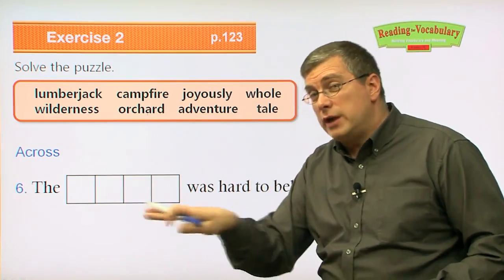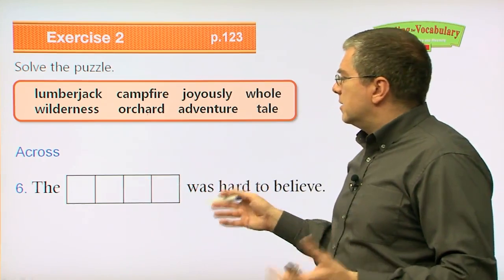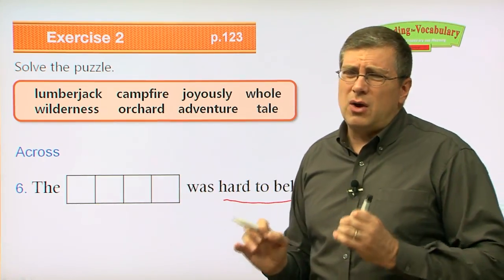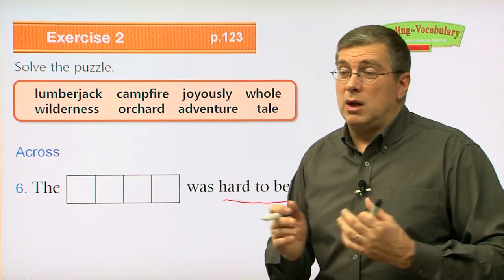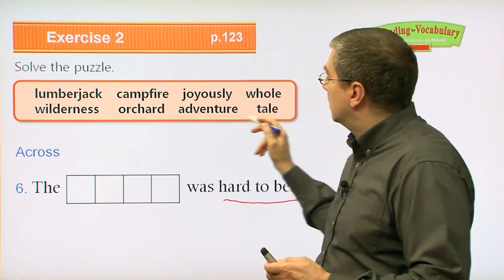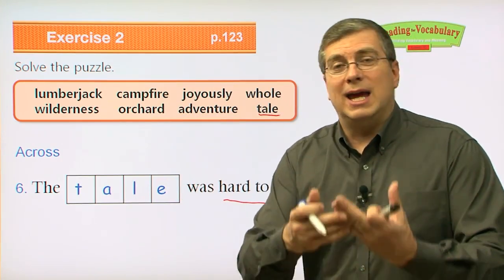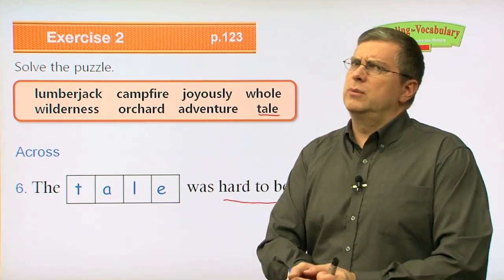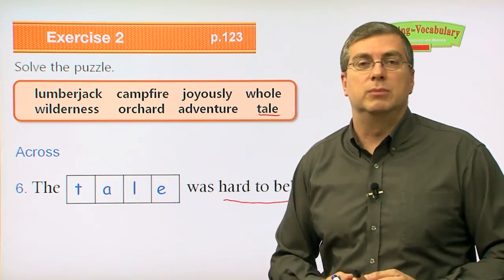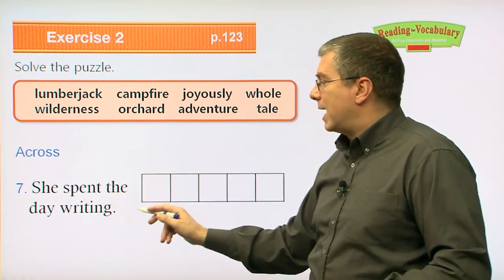Number six across: 'The ___ was hard to believe.' We're looking for a four-letter word. If somebody tells you something and you have a hard time believing it, what can they tell you? They can tell you a story — and what's another word for story? Four letters: tale. One, two, three, four. If somebody tells you a story or a tale and you think 'I can't believe that,' the tale was hard to believe.